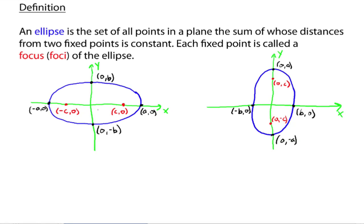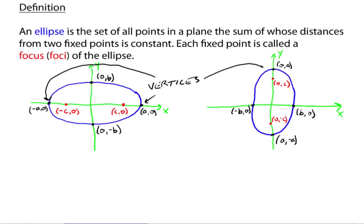A, 0 and negative A, 0 — these are called vertices, the vertices of your ellipse. The vertices lie on the major axis, as well as C, 0 and negative C, 0 — the red points I have here. Those are the foci. The foci also lie on the major axis. So make note: the major axis is the longer axis, and the vertices and the foci both lie on the major axis.